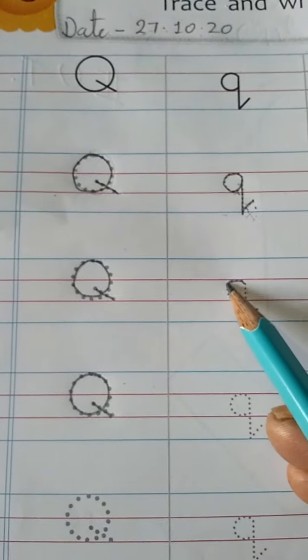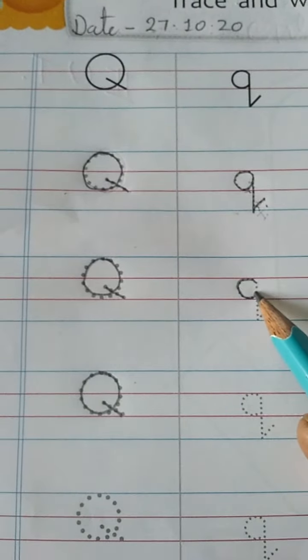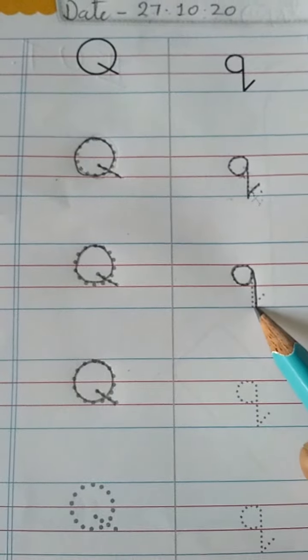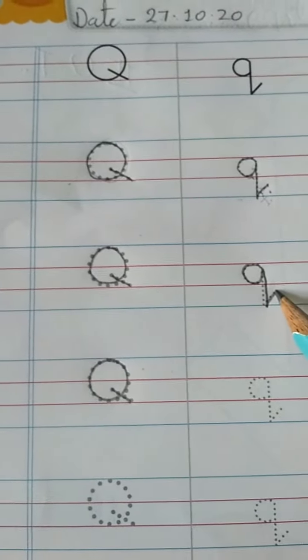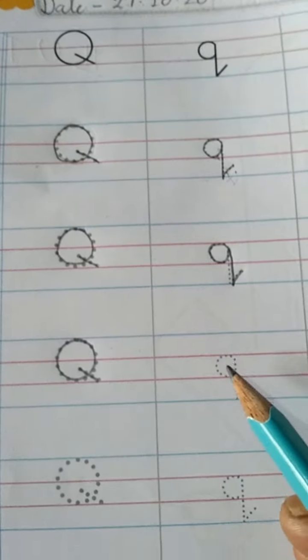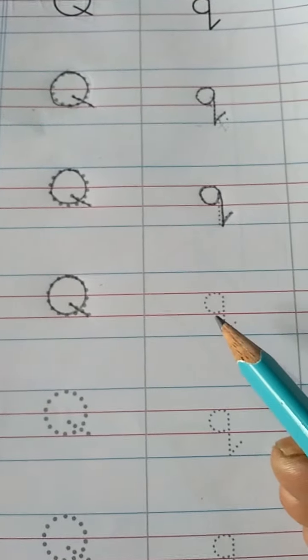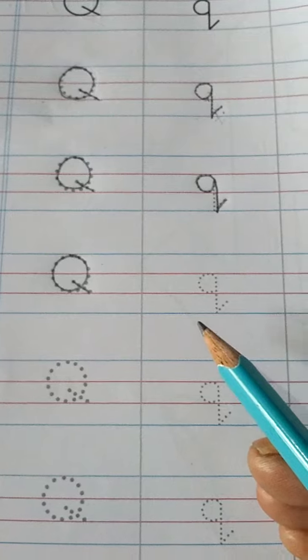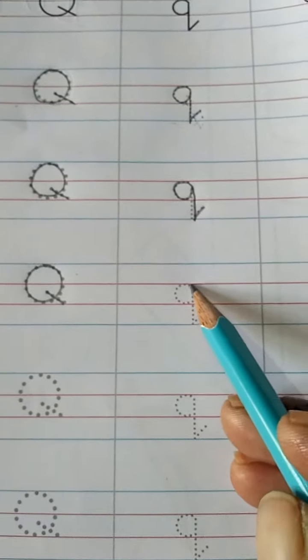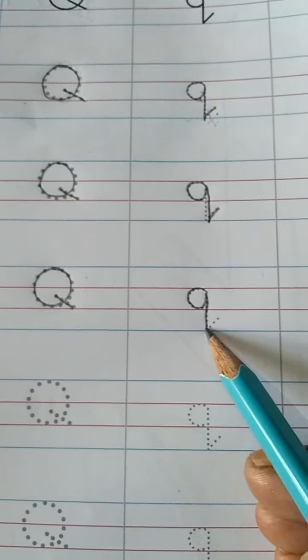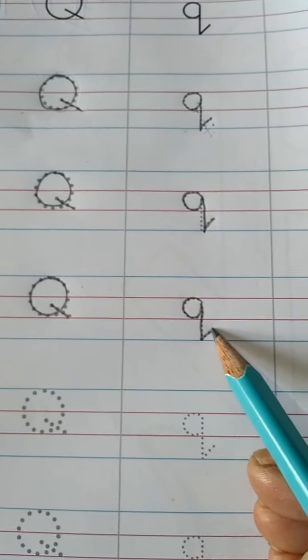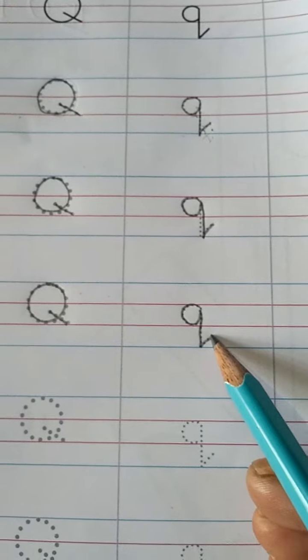Draw a circle, and then slanting line, and then slanting line. This is small letter Q. You have to draw a circle, and then slanting line, and then slanting line. This is small letter Q.